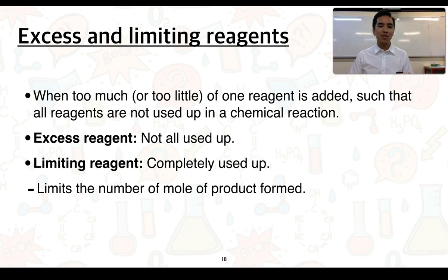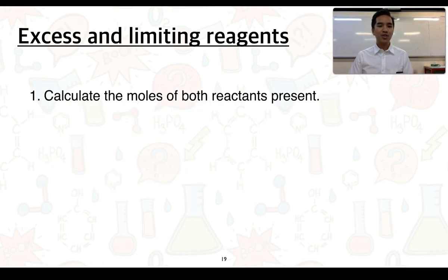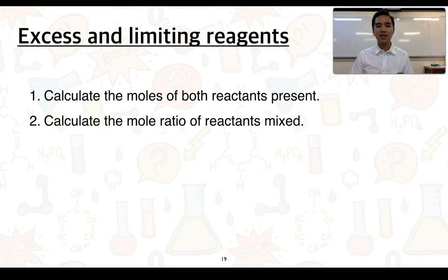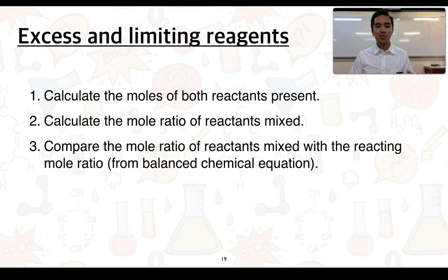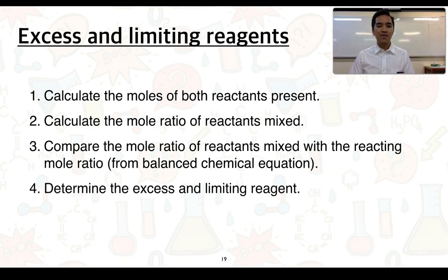So in this situation, we're going to need to work out what our limiting and excess reagents are. From there, we can then only determine how much of a product may actually form. To do this, we can follow a range of steps. The first step is to calculate the number of moles of both reactants present. The second step is to calculate the mole ratio of reactants that we have mixed and then compare that to the mole ratio of reactants mixed with the reacting mole ratio, which is based on the balanced chemical equation. From there, we can then determine the excess and limiting reagents, and then we can solve any other problems that are necessary.